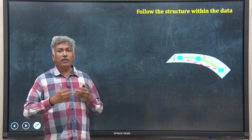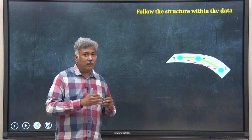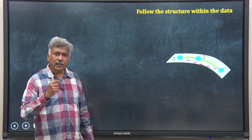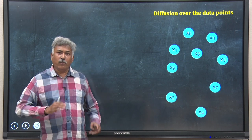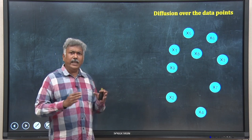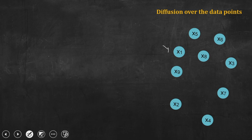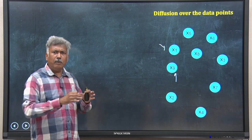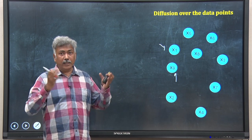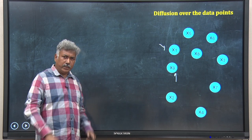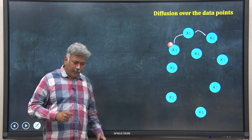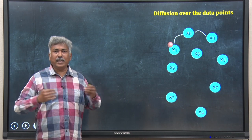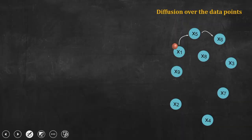In diffusion maps, we use the idea of diffusion and diffusion distance for this purpose. Let me explain what diffusion distance is. Suppose I have 9 data points x1 up to x9 scattered in space — they may be multidimensional, 10 or 100 dimensions. You take an imaginary particle and put it on x1, and let it diffuse through the dataset — hopping from x1 to x5, then x6, or from x1 to x8, x9, x7, x6. This imaginary particle hops from one data point to another, traversing the whole space following the geometry of the data.